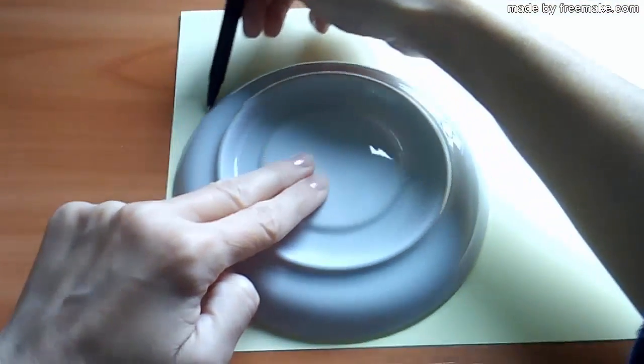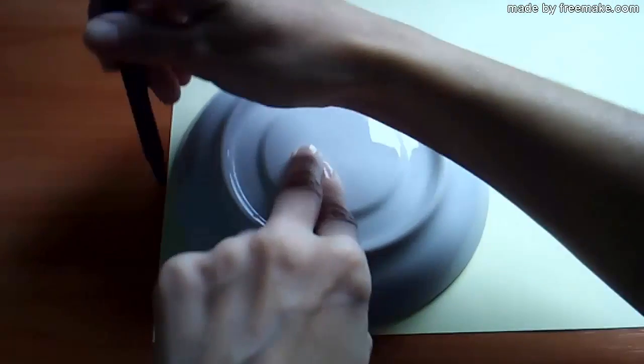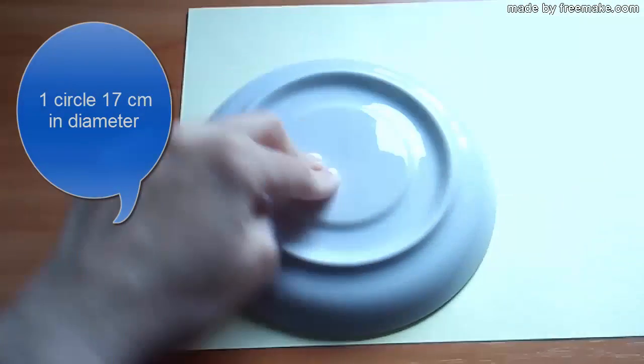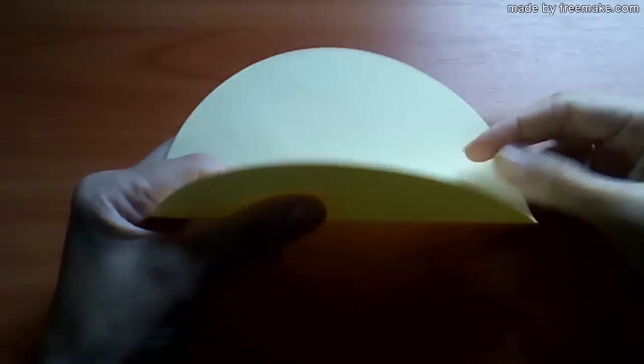First we need to cut a circle from cardboard with a diameter of 17 cm. And now fold the circle in half.